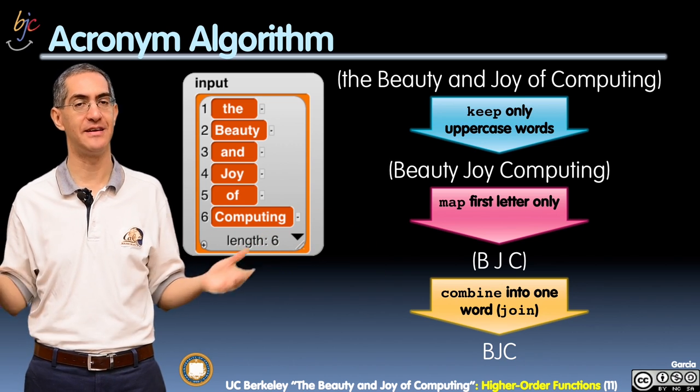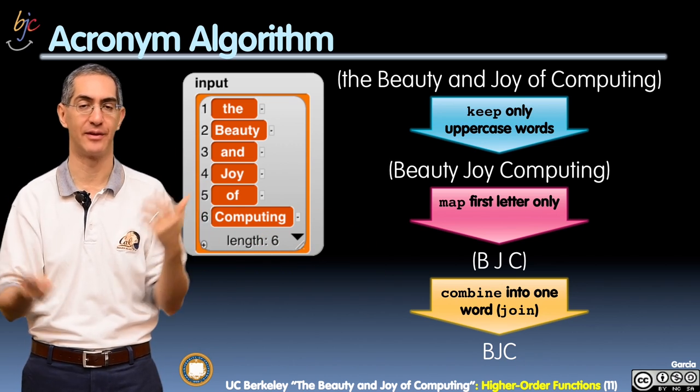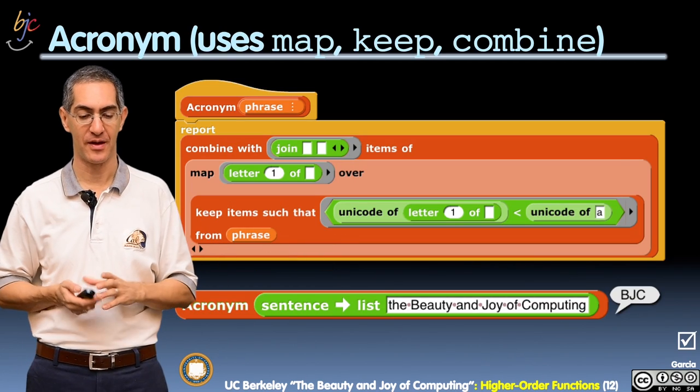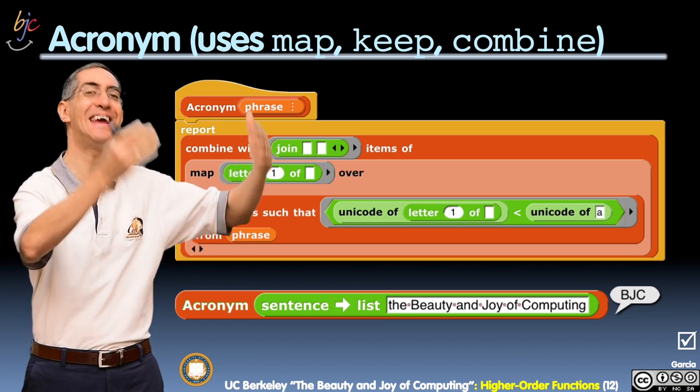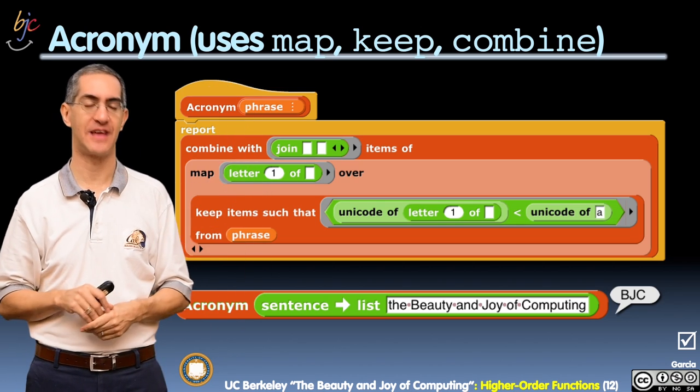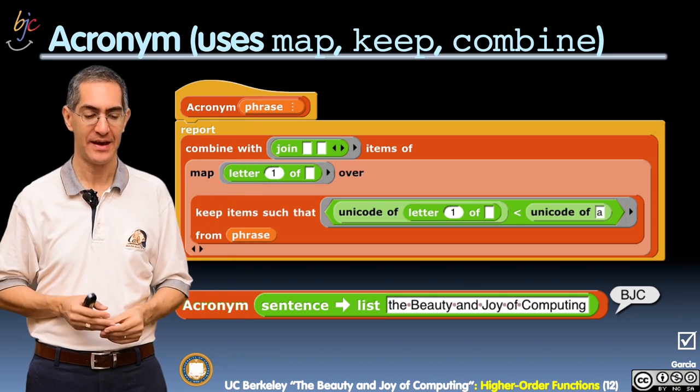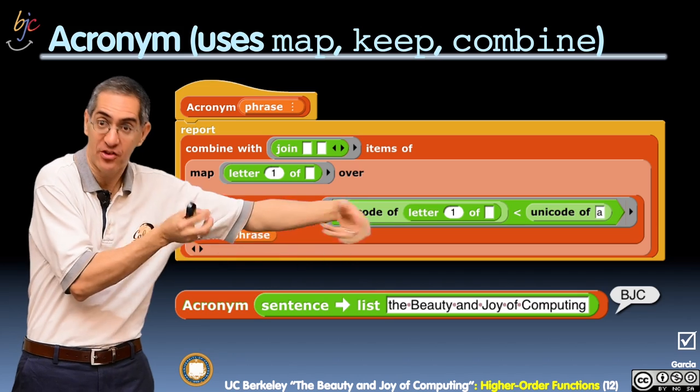So you get the letter BJC. By the way, this was an earlier activity we asked you in lab. Here is an explanation of how to do it and there's the code. The way you think of this cascading nature of these higher-order functions, which is very common, is that the innermost function is the starting point.